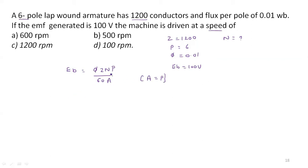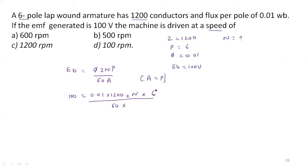We can find speed using this formula. Substituting all parameters: Eb = 100, φ = 0.01, Z = 1200, speed N we have to find, number of poles = 6, divided by 60 into A. Since A equals P, A equals 6. Solving, speed N equals 500 RPM.